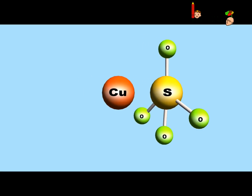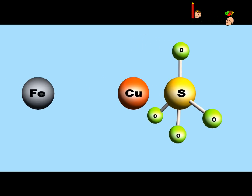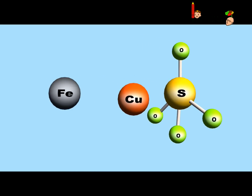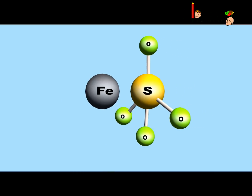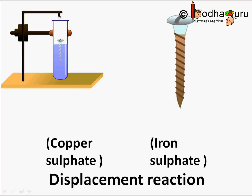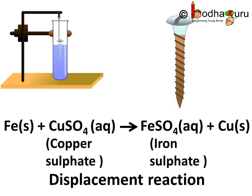Look here — the iron atom throws out the copper atom from copper sulfate and takes its place. So molecules are not getting combined or getting decomposed. Just a particular atom gets replaced by another and we get a new molecule.